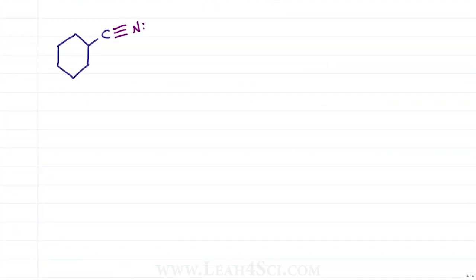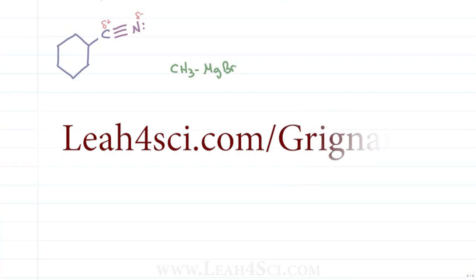Grignard wants to attack the nitrile because the bond between carbon and nitrogen is polar. Carbon is partially positive and nitrogen is partially negative and as we know about Grignard reagents which I teach on my website link below or at lea4sci.com slash Grignard.